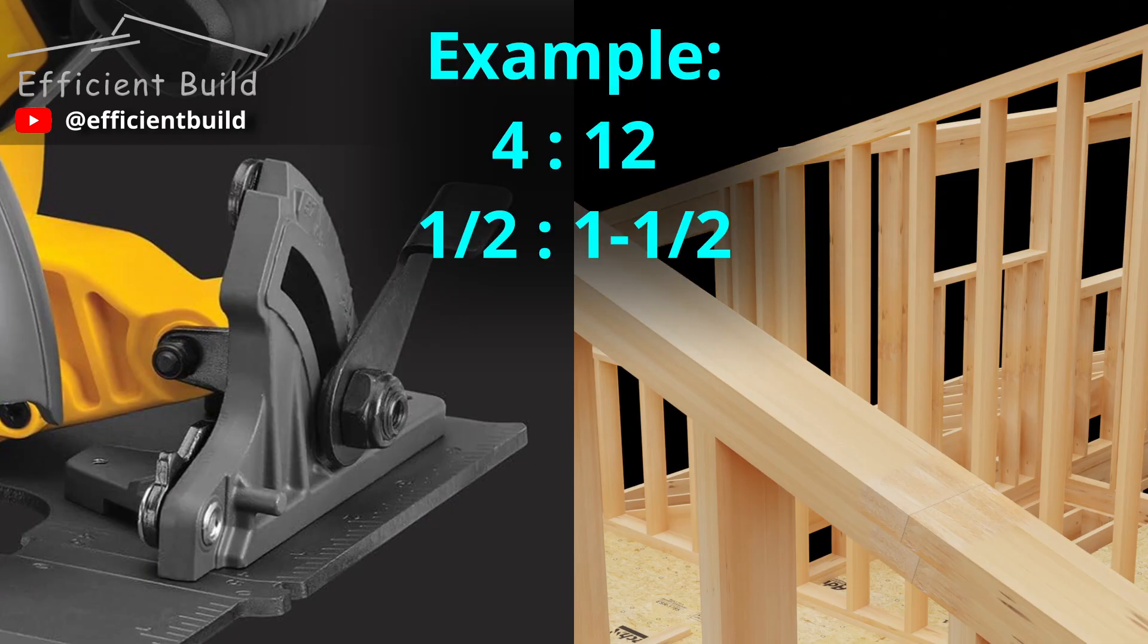Let's take for example a 4:12 pitch roof. This simplifies to 0.5 and 1.5. This will help you verify the angle of your saw because we know one side will be half an inch longer.